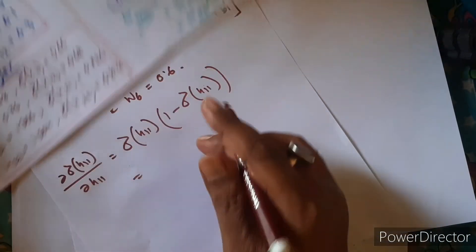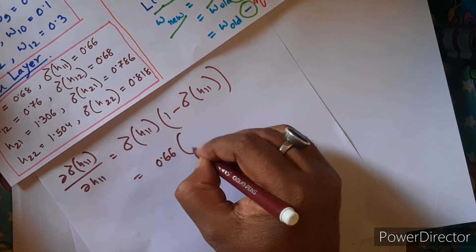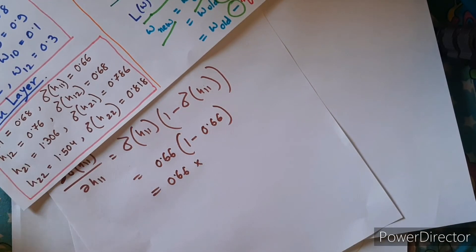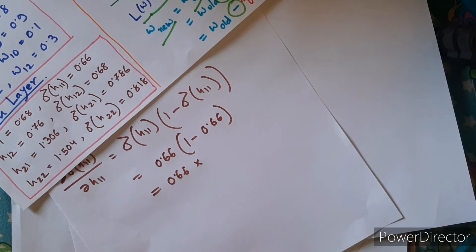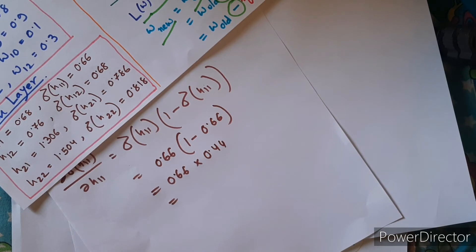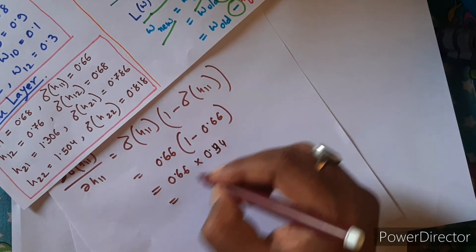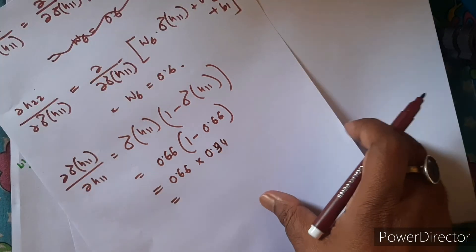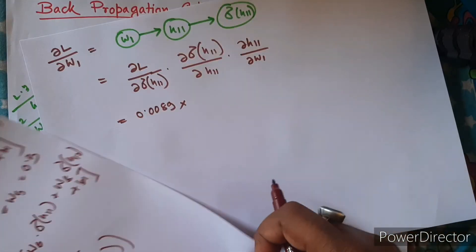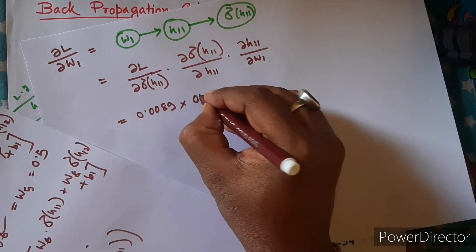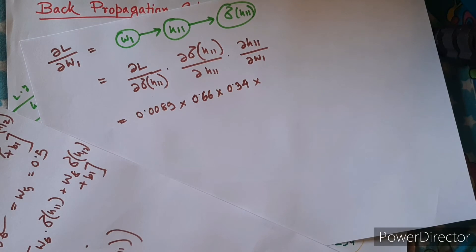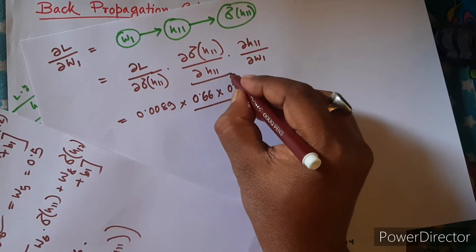And you know the value: it is 0.66 into 1 minus 0.66 is equal to 0.66 into 0.44. Now you don't know the last portion - what will be this one, right? So let's keep it like this. What will be the last portion? So this is for this portion.